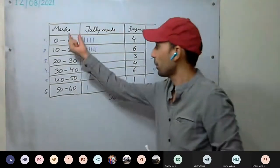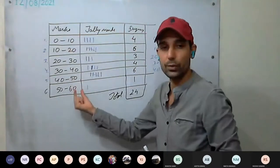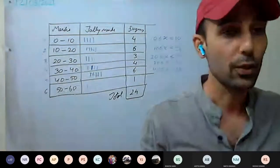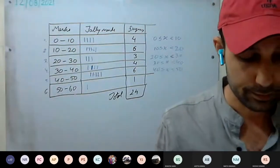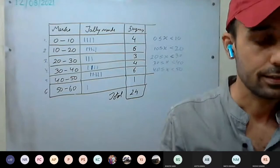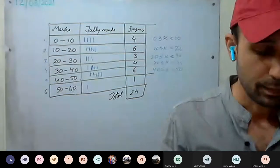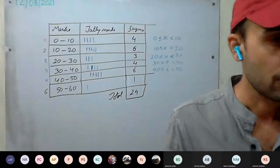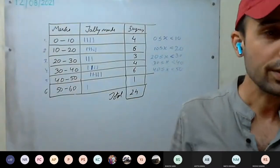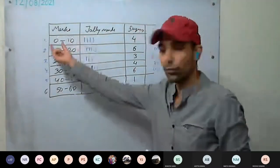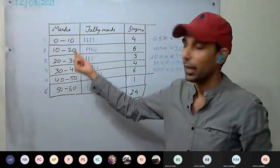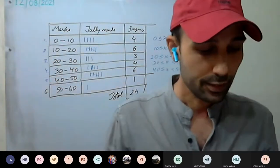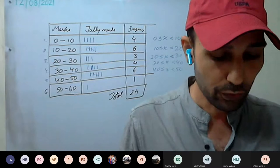Always remember upper limit is excluded — it is exclusive form and mainly we will be using exclusive form only. There will be questions where inclusive form is given and we'll be converting it into exclusive form; we'll do that later. The third question is clear.